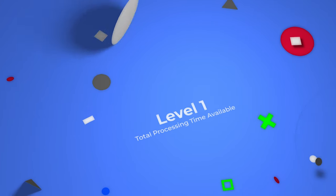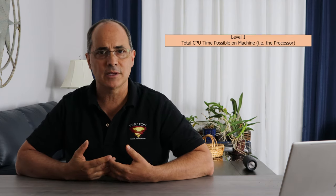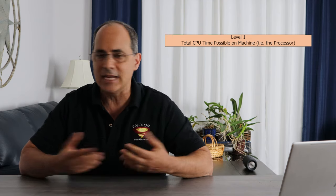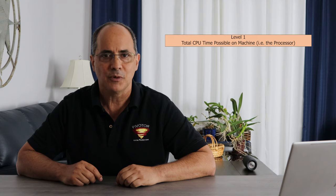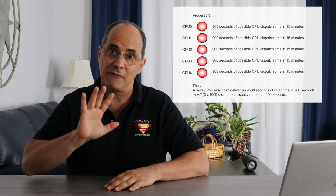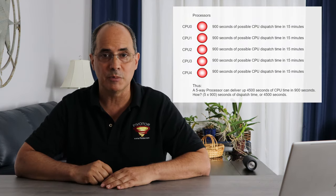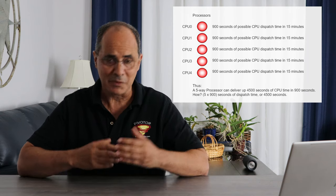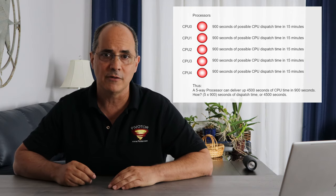So now let's talk about the seven levels. Level one — the highest level. The first CPU measurement we're interested in is understanding the total amount of CPU time that a processor can actually deliver to any of the workloads of a system. The formula is simple: you take the number of physical general purpose processors and multiply by your measurement interval. For example, a five-way processor — five physical CPUs — times a 900-second measurement interval equals 4,500 seconds of CPU time.